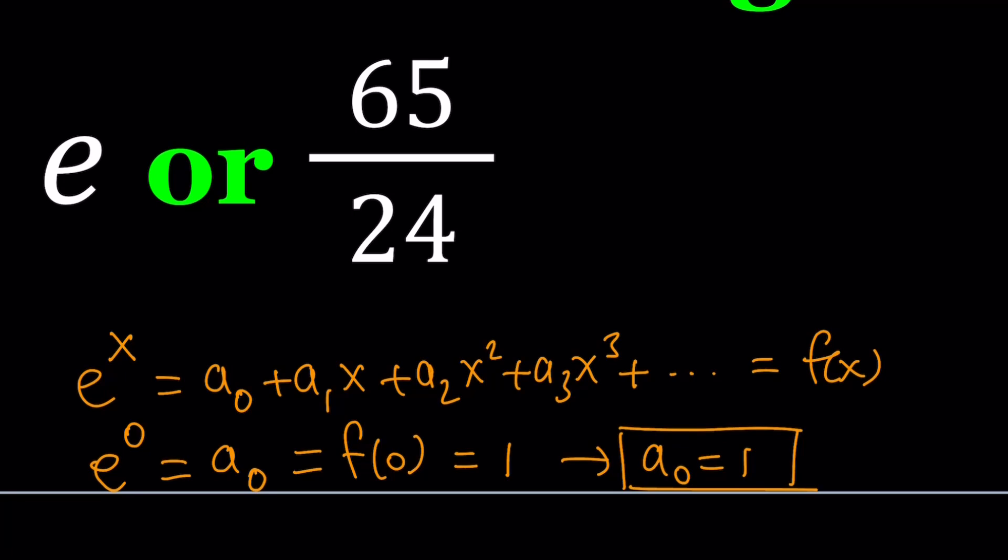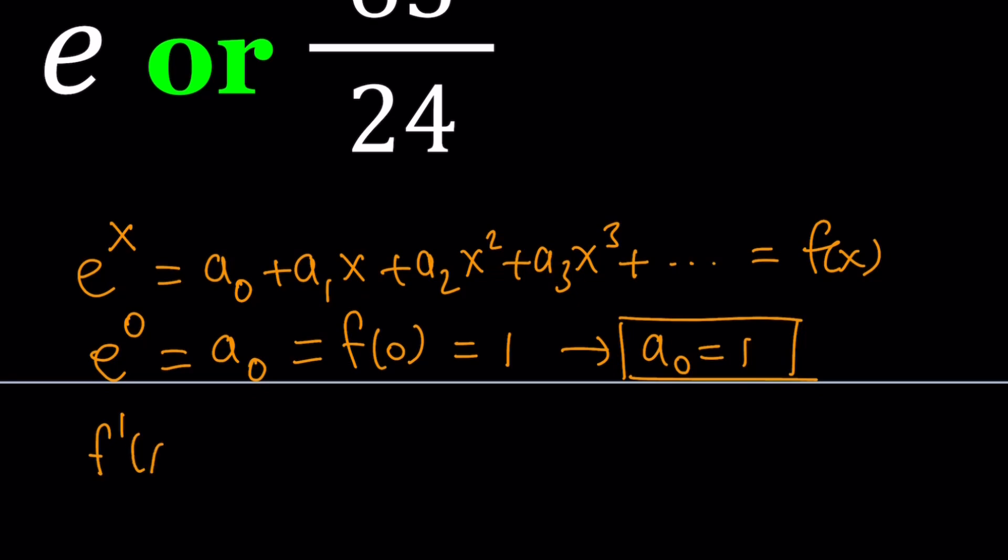Now, the next thing we're going to do is we're going to differentiate this function once. If you differentiate e to the x, you always get e to the x. That's what's nice about it. Its rate of change is the value at that point. But if you differentiate this infinite polynomial, even though it's infinite, you can still differentiate term by term and get a pattern. The derivative of a sub zero is zero, a sub one x is just going to be a sub one. And then from here, you're going to get two a sub two x. And then you're going to get three a sub three x squared, so on and so forth.